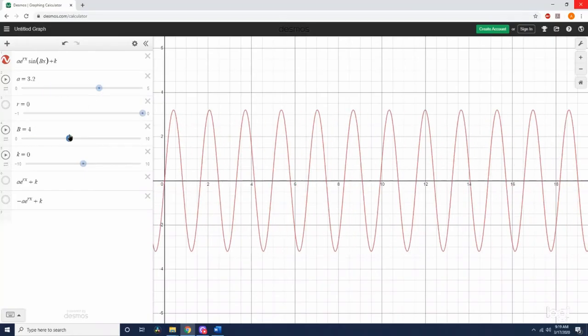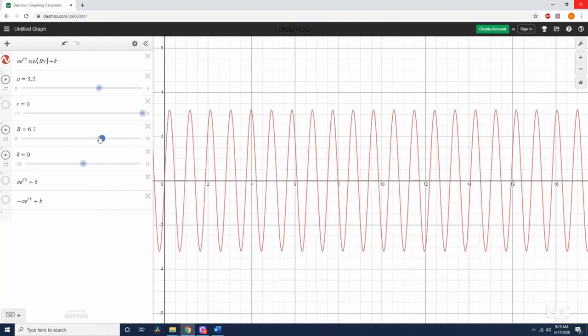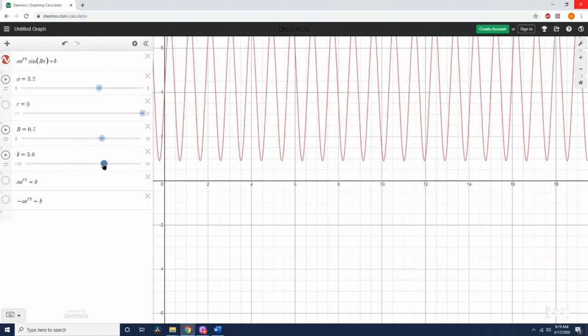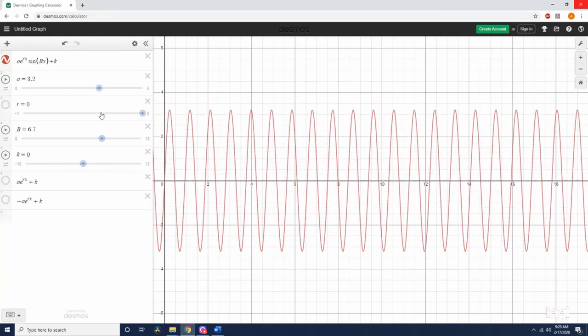Our capital B here is, again, affecting the period. So as capital B goes up, the period goes down. K is the midline, and it goes up and down like this.